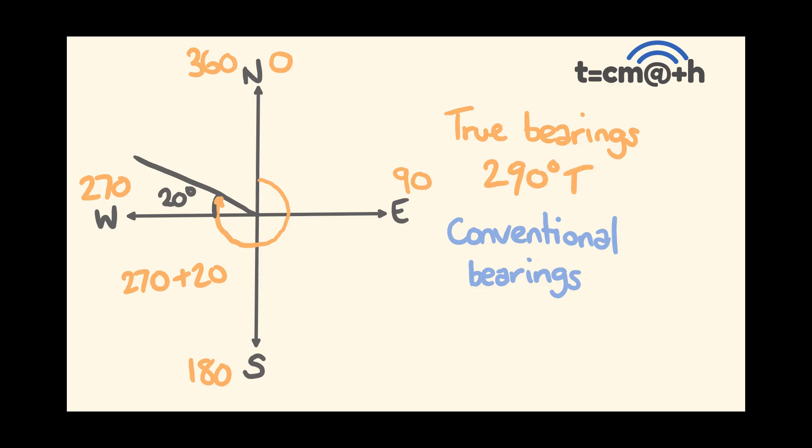Conventional bearings. We're starting with north here. We're facing in a more north direction, put the north down. We're going to go north, and we're moving in a westerly direction, so we're going to have a west over here. How far have we gone? Well, we know this is 90 degrees. 90 take away 20, this is going to be 70 degrees. So this is north 70 degrees west.